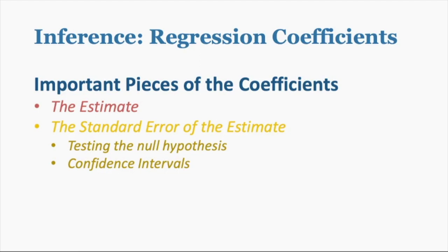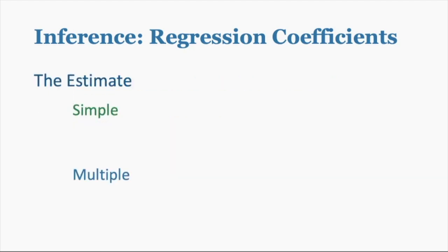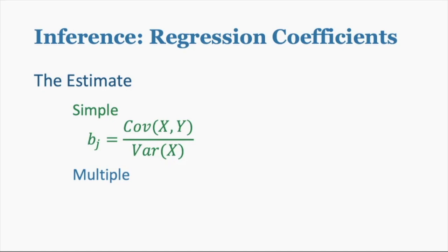When it comes to the important pieces of coefficients, there are really two: the estimate itself, which tells us the relationship, and the standard error of the estimate, which gives us the information to do the null hypothesis test. And what we haven't talked about much yet are confidence intervals. The estimate comes in two forms — for simple regression it's the covariance of X and Y divided by the variance of X. For multiple regression, all coefficients are estimated with one equation using a linear algebra approach.